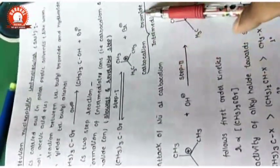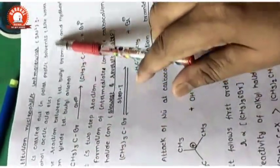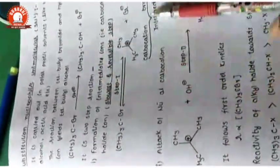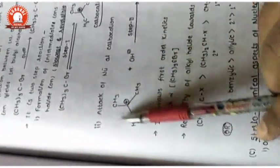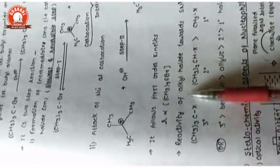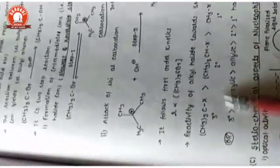Since SN1 is completed in two steps with formation of ionic intermediates (carbocations), it is carried out in polar protic solvents. There is no requirement for a very strong nucleophile and the nucleophile concentration can be low. It follows first-order kinetics, depending only on the concentration of the haloalkane. Reactivity order is opposite: tertiary > secondary > primary.